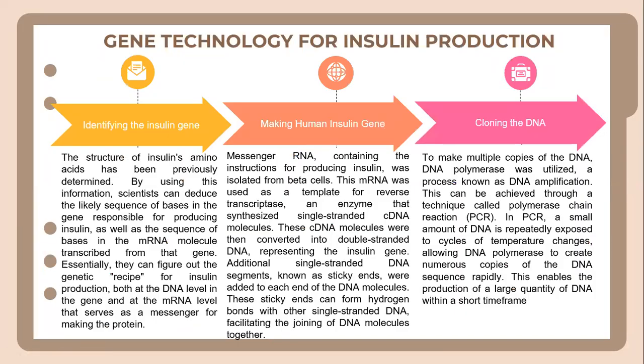Gene technology for insulin production can be divided into several processes. The first is identifying the insulin gene. The structure of insulin's amino acids has been previously determined, and using this information, scientists can deduce the likely sequence of bases in the gene responsible for producing insulin, as well as the sequence of bases in the mRNA molecule transcribed from that gene. Essentially, they can figure out the genetic recipe for insulin production at both the gene and mRNA level.